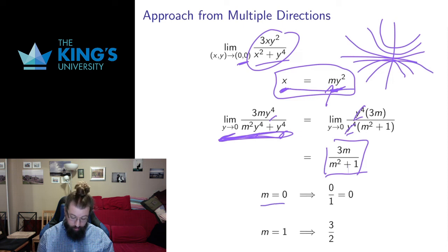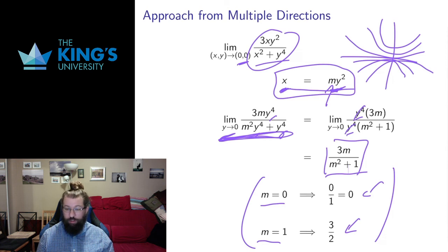It turns out this limit depends upon the parameter of this parabolic path. If the parameter is 0, that means approaching along a straight line, then the limit is 0. If the parameter is 1, that means approaching along a certain parabola, then the limit is 3 halves. Already I can stop because I can prove here that my limit already depends on which parabolic path I approach on. And if the limit depends on the direction of approach or the path of approach, that means the limit cannot exist.